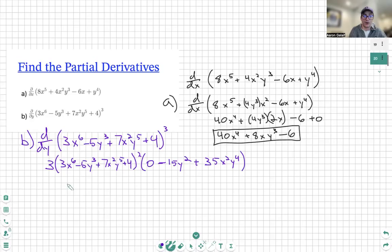Let's clean this up even further. We have 3 times 3x to the sixth minus 5y cubed plus 7x squared y to the fifth plus four. So everything in our original. And then our derivative.